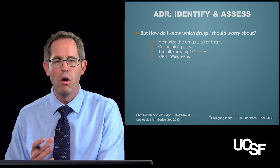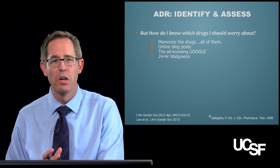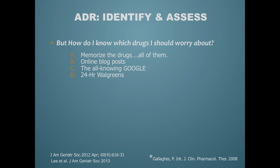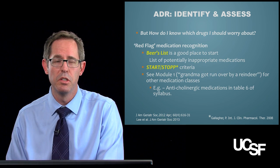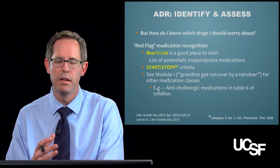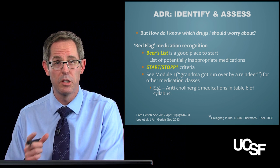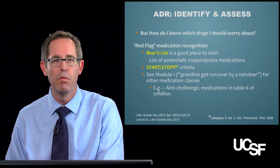So which drugs should you worry about? You go through all this trouble to get an accurate med list and then think, I don't even know which meds I should worry about. You could memorize all the drugs — that would probably make most pharmacists a little jealous — or go to online forums, consult Google, or hope you get a nice pharmacist at the 24-hour Walgreens. But there are proven reputable sources as well. The first is the Beers List, which gives potentially inappropriate medications for the elderly. It will be revised in 2016, and it does a great job of starting to build your radar of what to worry about.